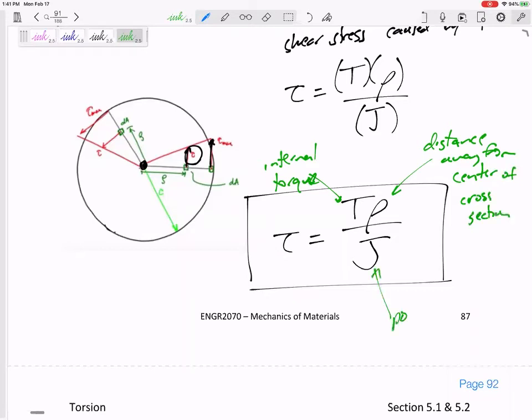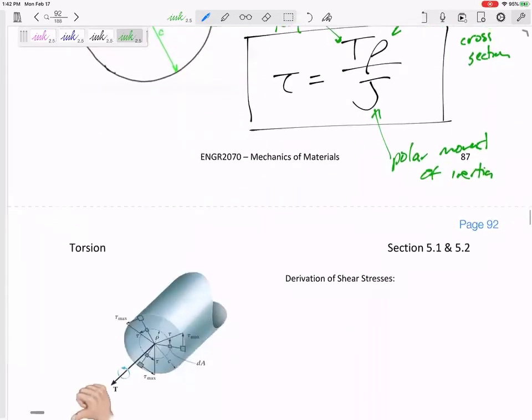J is the polar moment of inertia. It is a measure of how much area is away from the center of your cross section. Mass moment of inertia is a measure of how much mass is away from your rotation. Area moment of inertia is a measure of how much area. And polar moment of inertia is a measure of how much area is out from the center and how far out radially it is from the center. Polar moment of inertia is its resistance to twisting.